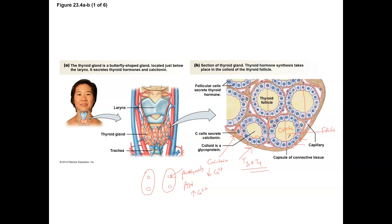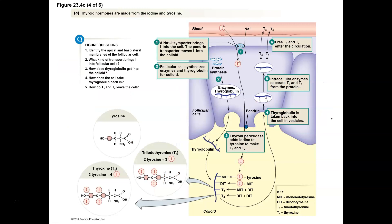Inside the thyroid follicle is this colloid material. In this particular diagram, what you're looking at is the blood supply going to the thyroid gland. Here we have a blood vessel and the blood supply. Then here we have the follicular cells going all the way around the follicle. And then this inner portion is the colloid material.